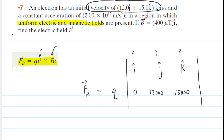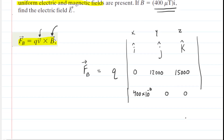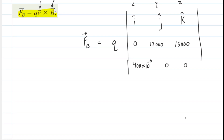Next, we move over to the magnetic field. The magnetic field only has an i-hat or x component — it's 400 micro-teslas. So for the x component of the magnetic field we write 400, and because it's in micro-tesla we multiply by 10 to the minus 6 to convert to tesla. The other two components are both zero. This completes the cross product setup.